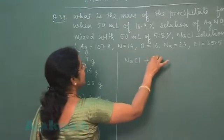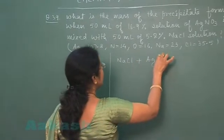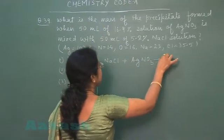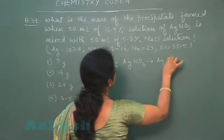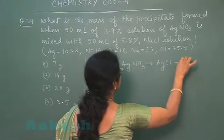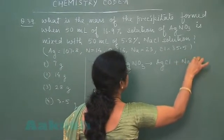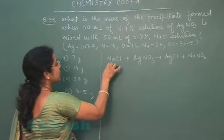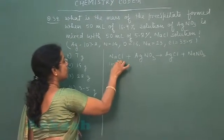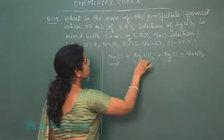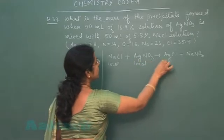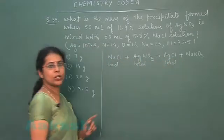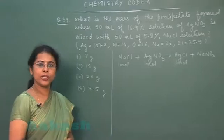NaCl reacts with AgNO3 to produce AgCl plus NaNO3. According to the balanced chemical equation, one mole of NaCl reacts with one mole of AgNO3, and the precipitate formed is one mole of AgCl.